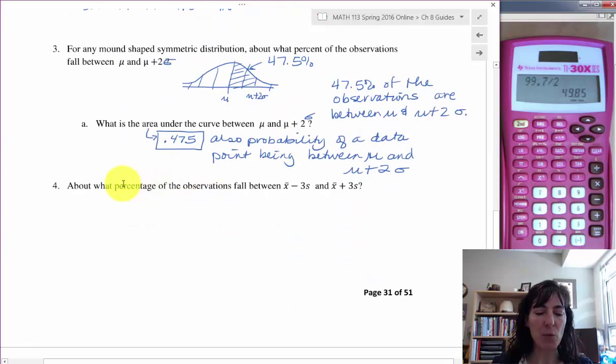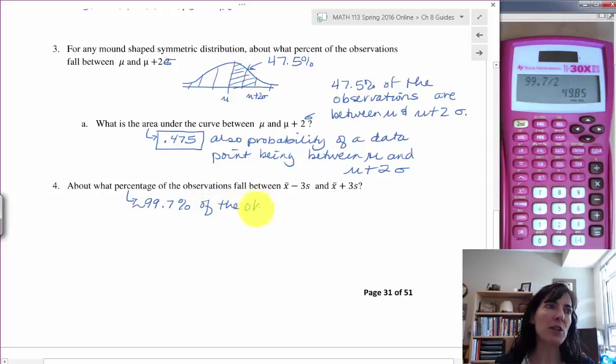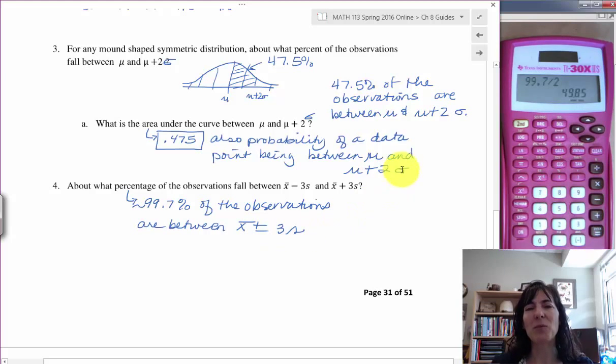So we'll say what percentage, so be careful on these, and look for what they're asking. So it's asking for percentage. So we'll say 99.7%, and it is approximate, so we can put that squiggly there. Approximately 99.7% of the observations are between x-bar plus or minus 3s. And you can write it with the plus or minus instead of writing them out both.